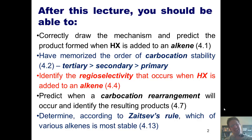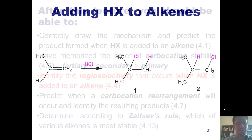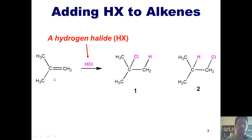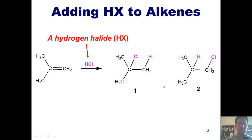With that said, let's get started. We've seen this reaction in our previous chapter. We can take an alkene and add a hydrogen halide, HX, where X is either a chlorine, bromine, or iodine, and we end up generating one of two possible products.